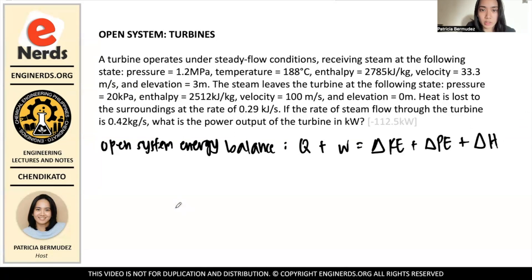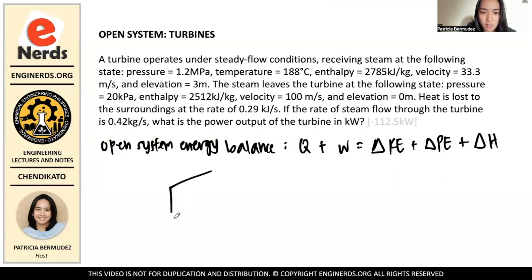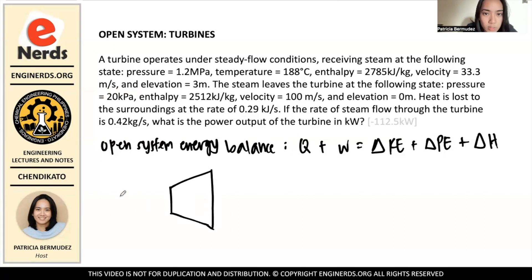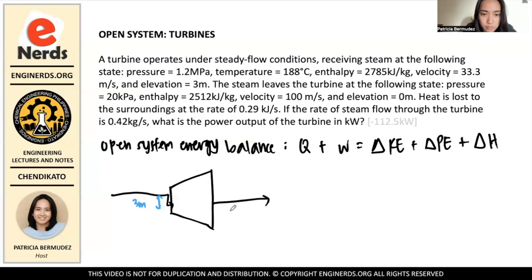Now we're going to draw a turbine. A turbine is actually the opposite of a compressor — the diameter at the entrance is smaller than the diameter at the exit, so the diameter expands. The inlet has an elevation of 3 meters, and the exit has no elevation, so it is 0 meters.